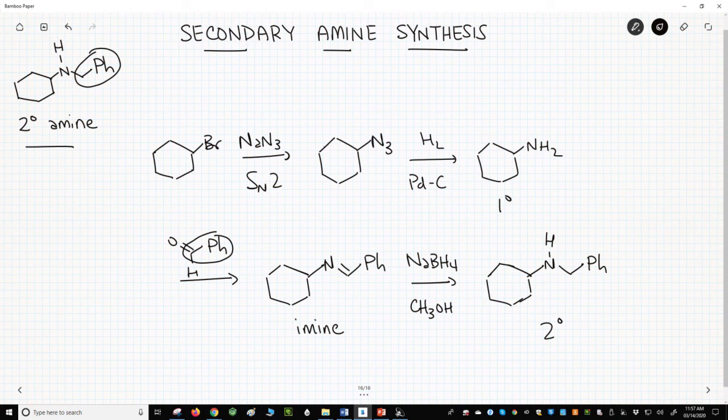Looking in the far upper right, we could have added the R groups in a different order. In the SN2 alkylation with azide, we could have used benzyl bromide. The carbonyl for the imine would then need to be cyclohexanone. This alternative approach would work just as well as the first.